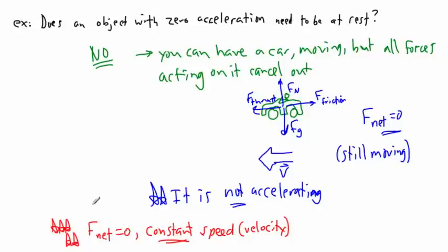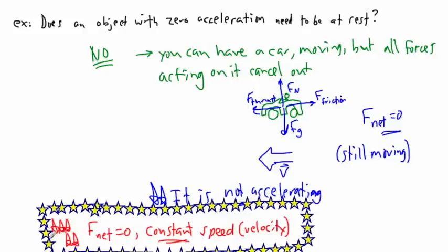So what this means, this is the key thing right here, is that if we have a situation where there's no acceleration, if acceleration is zero then we have a constant speed which means your car is going to just keep going at the same exact speed.